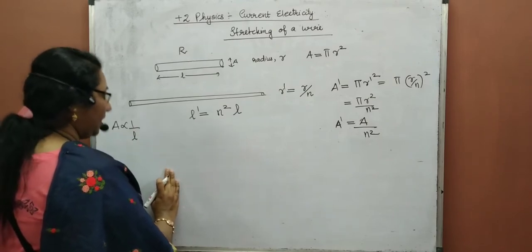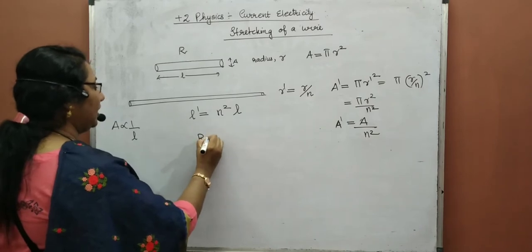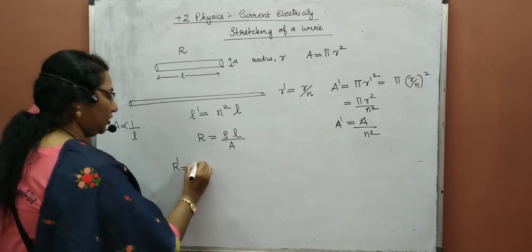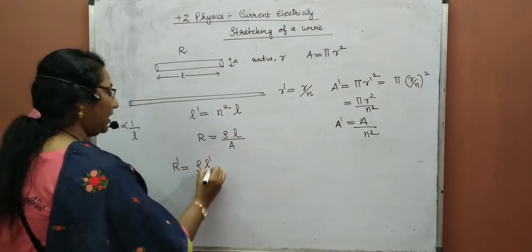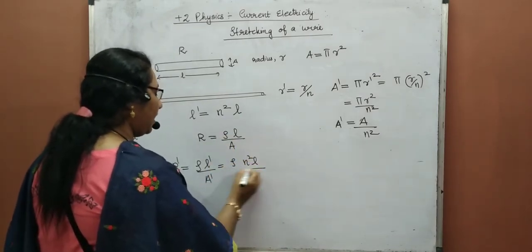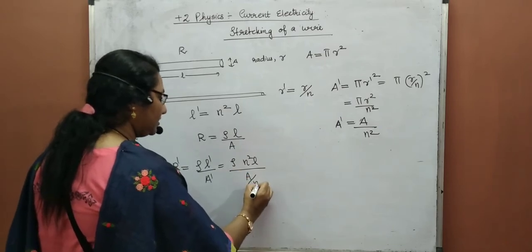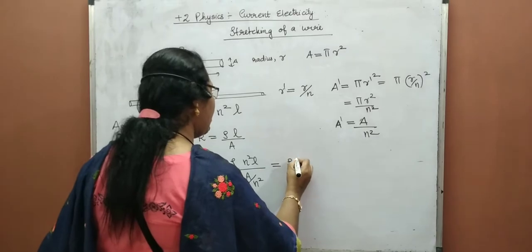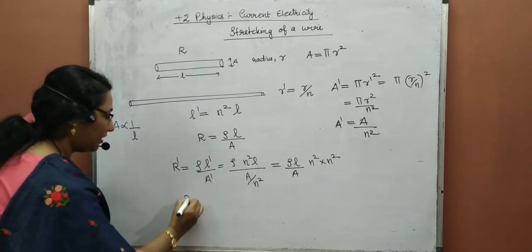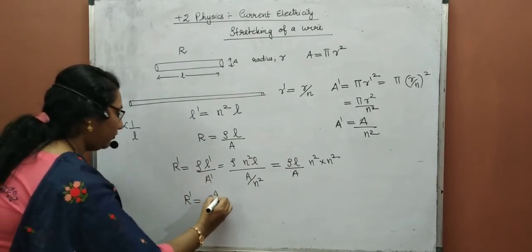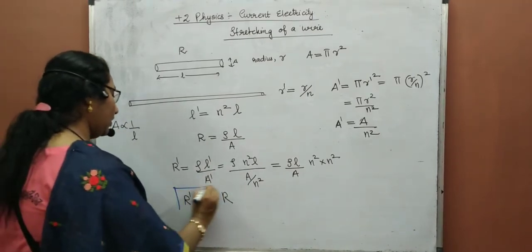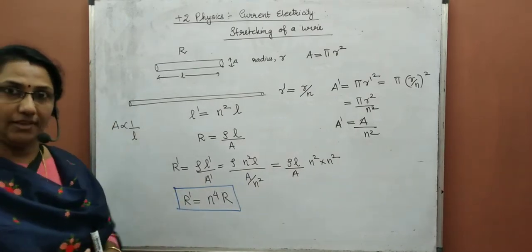So R' equals N⁴ times R when the radius reduces by 1/N times. Clear? Pause the video and take the notes.